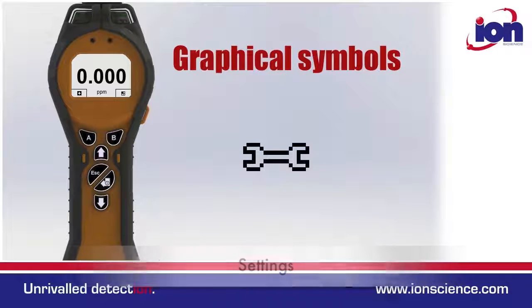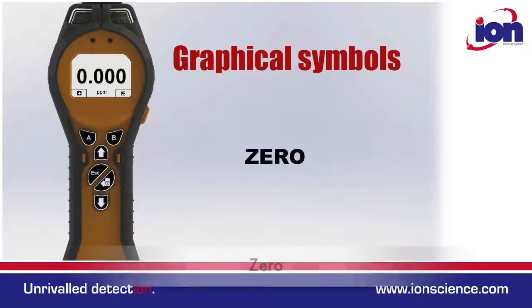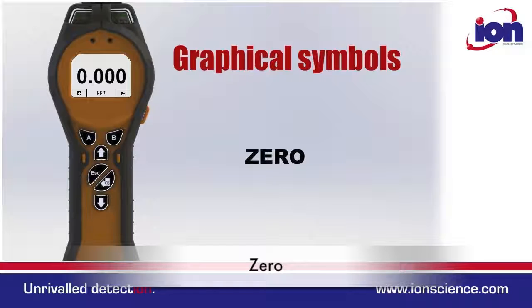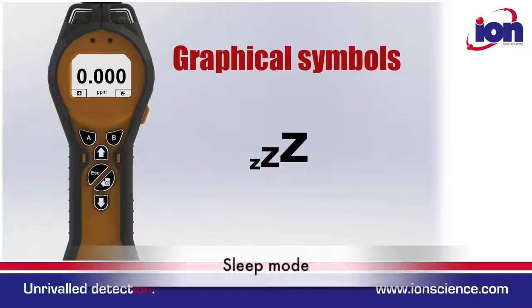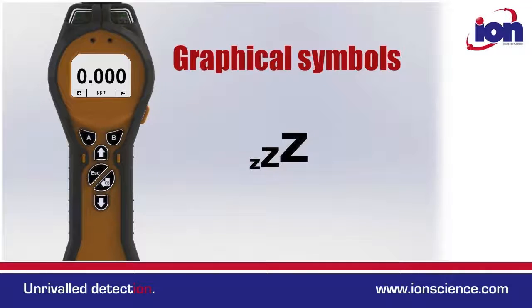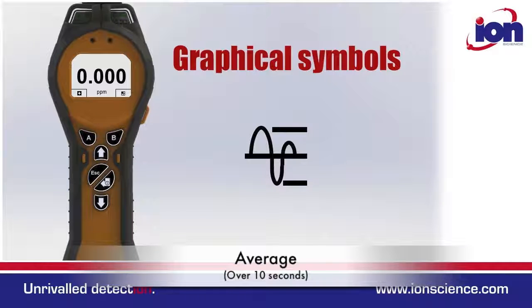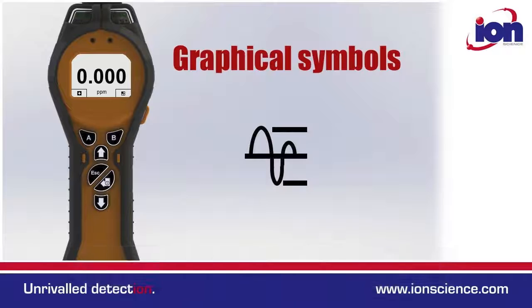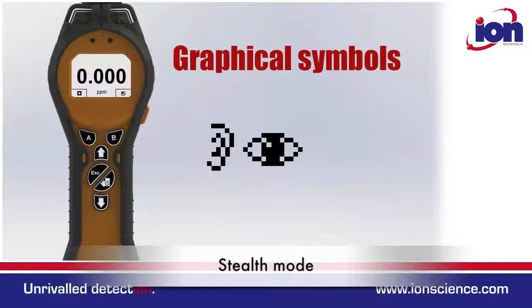Settings: this is where you adjust everything from backlight settings to a customer calibration. Zero: this allows you to zero out a known harmless background or use a fixed zero calibration point. Sleep mode: this puts the Tiger on standby, which conserves energy and avoids the full startup sequence.